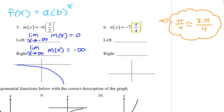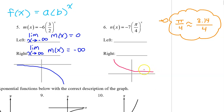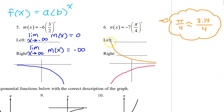In number six, the b value is pi over four. This is approximately 3.14 over four, which is less than one — more specifically, between zero and one. So this would be an exponential decay curve. However, because the a value is negative, the exponential decay curve is reflected over the x-axis.